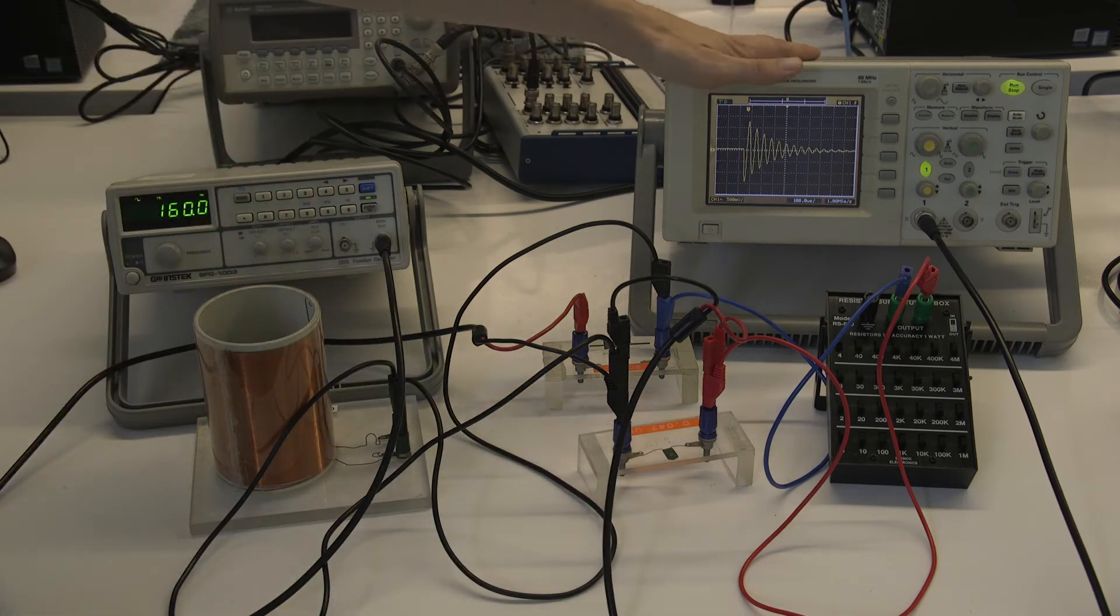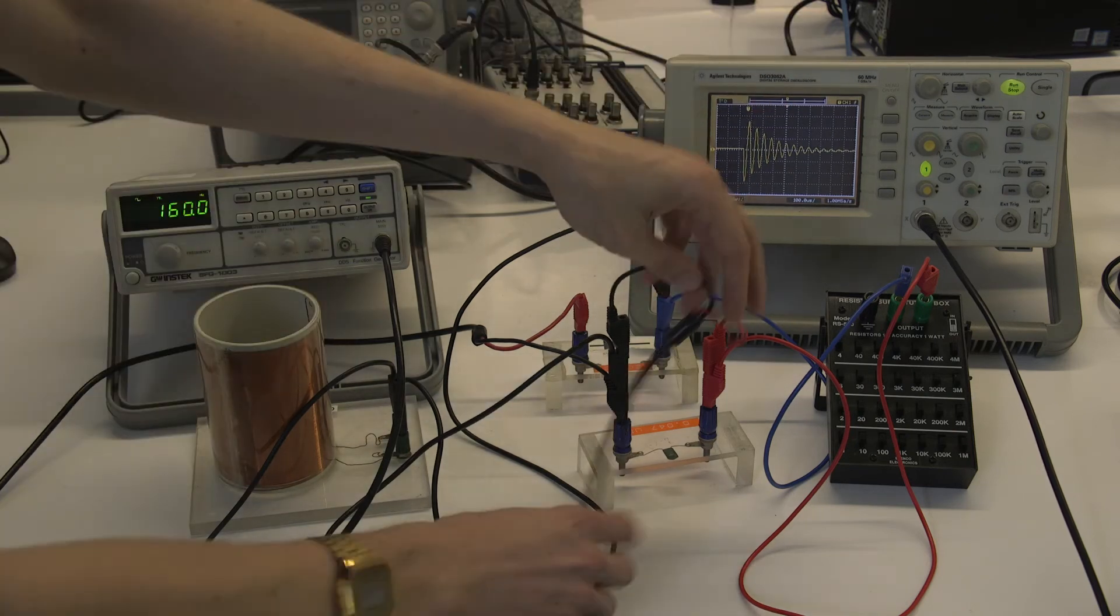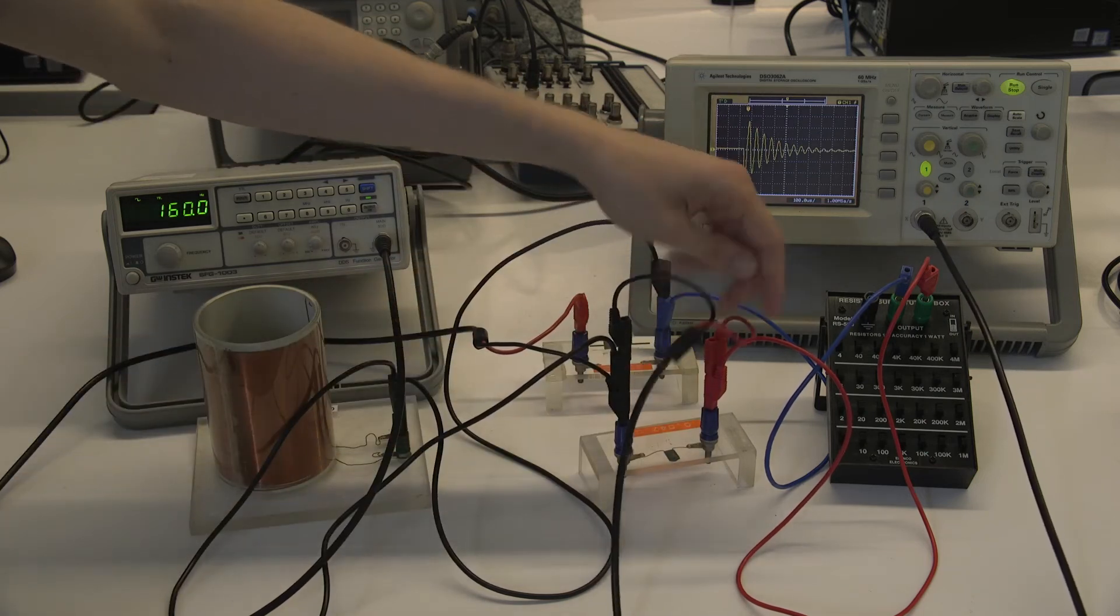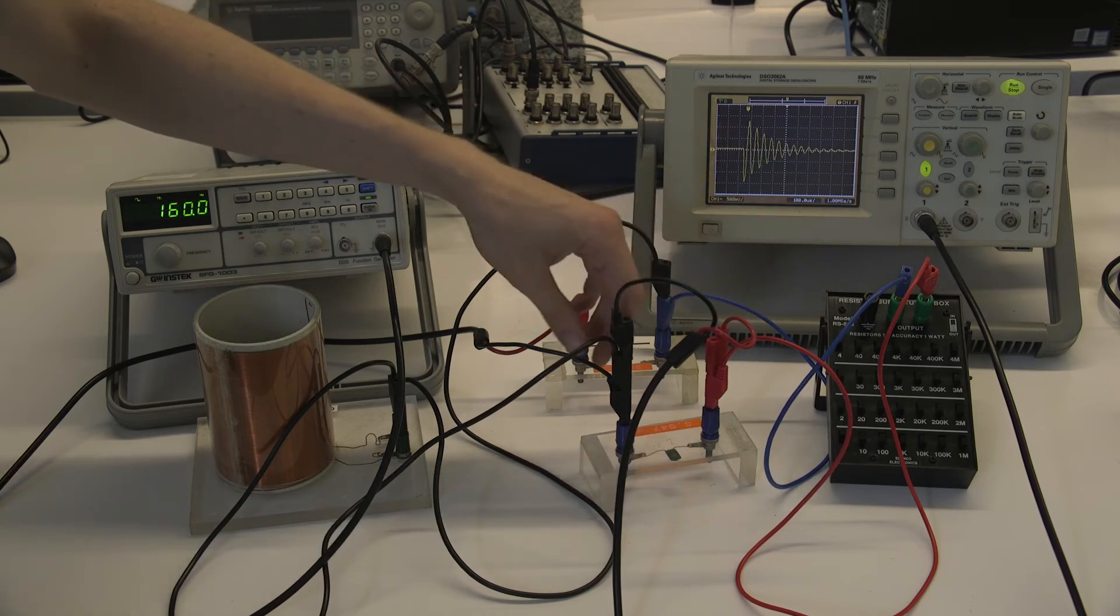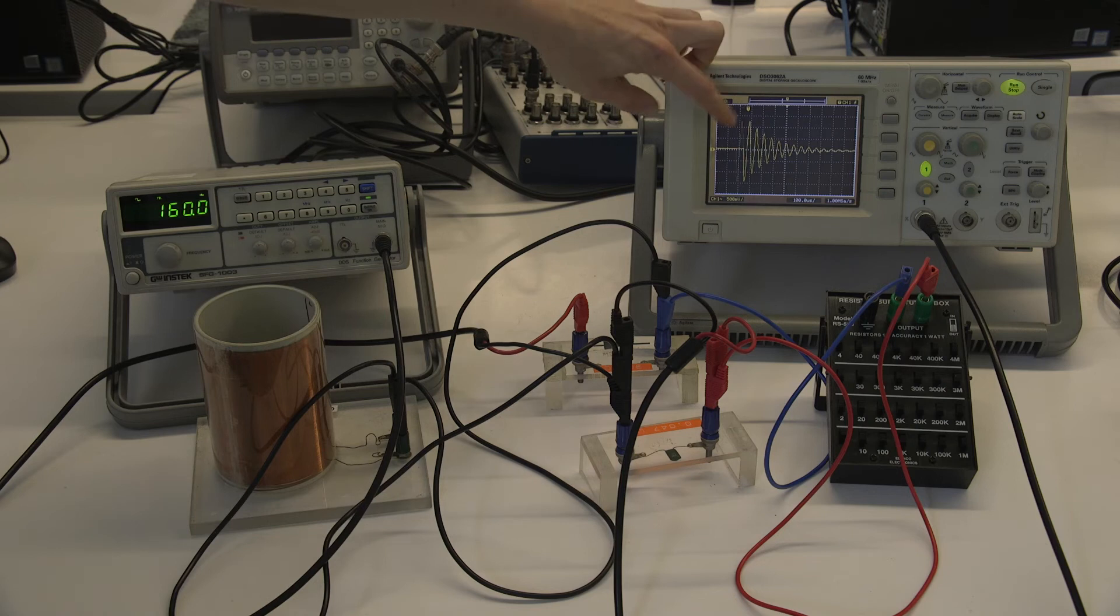And finally, an oscilloscope, which is used to actually measure the signal that's coming out. So at the moment, the oscilloscope is connected to the capacitor. It's important that you have the leads the right way around. So this is the high voltage side of the capacitor. So I have the red lead connected here, the black lead, the ground is the other side. And you can see at the moment, it's measuring the damped oscillations.